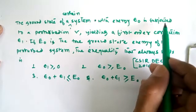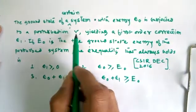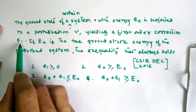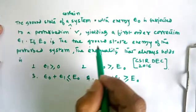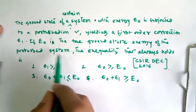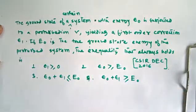The perturbation V yields a first-order correction of epsilon 1. If E₀ is the true ground state energy of the perturbed system, the inequality that always holds is the corollary of perturbation theory.